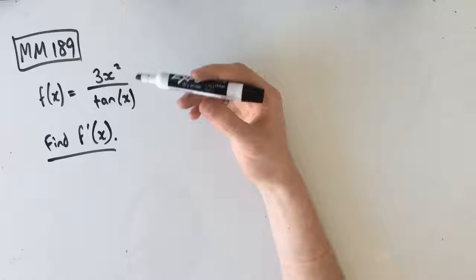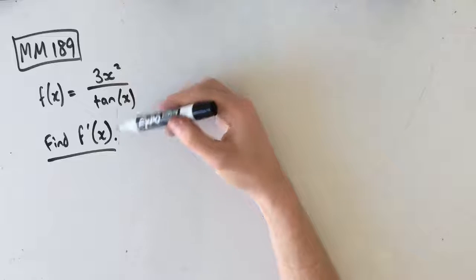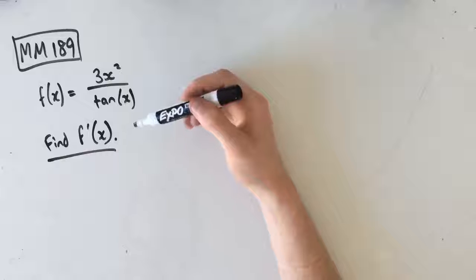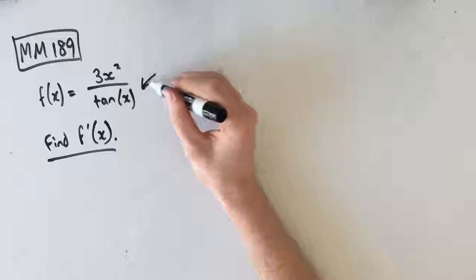So as always guys, immediately recognizing that we can't derive this normally because we've got a function divided by another function, which should tell us that we actually need to use our quotient rule.